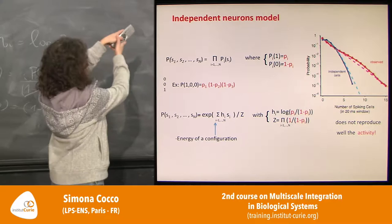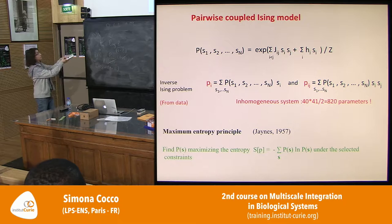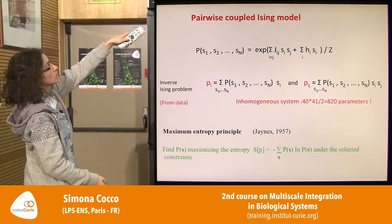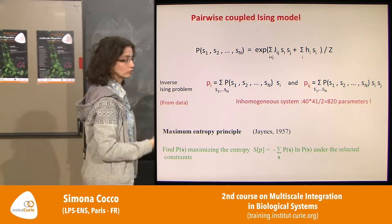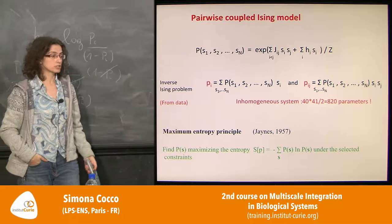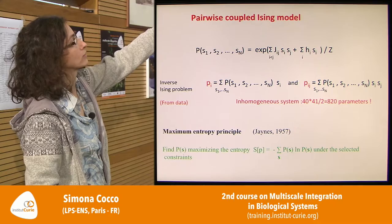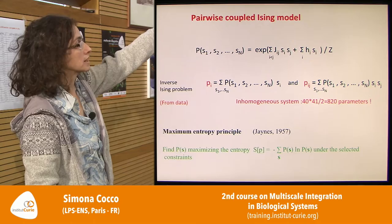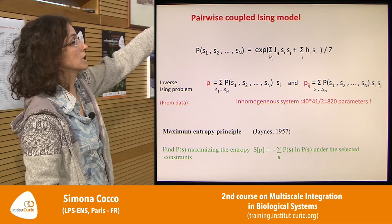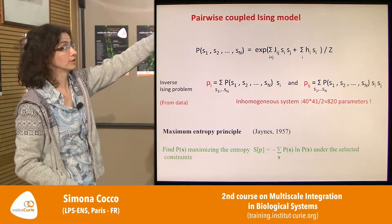The same logic applies for the coupling parameters: the average pairwise product S_i * S_j in the model should equal the empirical correlation p_ij. This can be understood analogously to Legendre transforms in thermodynamics — going from canonical to grand canonical ensemble by fixing average energy or average particle number instead of fixing exact values.